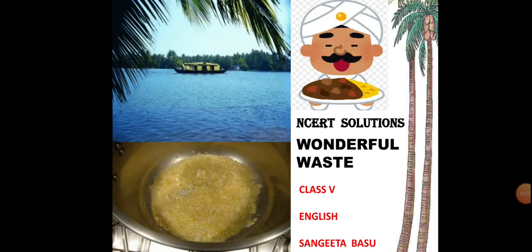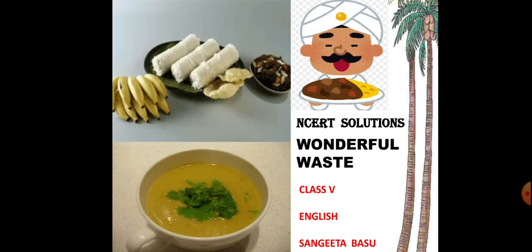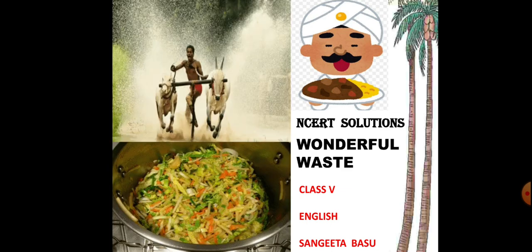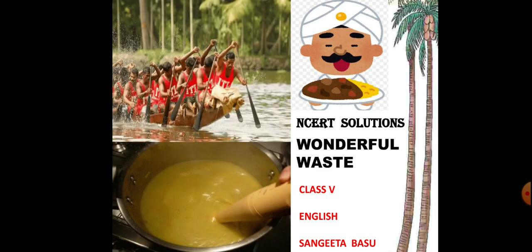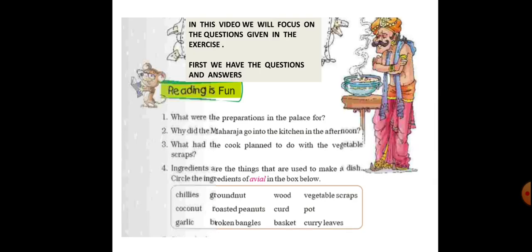Hello young learners. In this video I will be sharing the NCRT solutions for the lesson Wonderful Waste, Class 5 English. I am Sangeeta Basu. This is from the book Marigold. In my previous video I dealt with the explanation of the lesson Wonderful Waste. Now in this video we will first focus on the questions given in the exercise. We have questions like: what were the preparations in the palace for? Why did the Maharaja go into the kitchen in the afternoon? What had the cook planned to do with the vegetable scraps? And then we have a box where we have to circle the ingredients of avial.